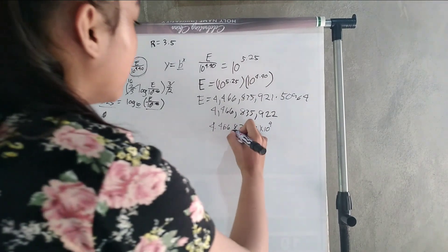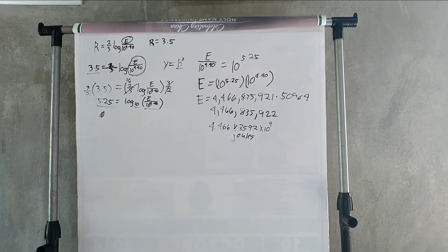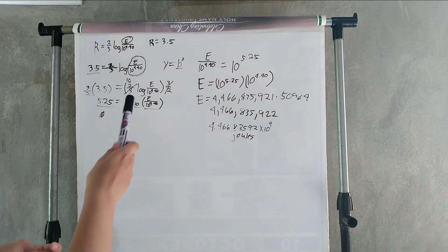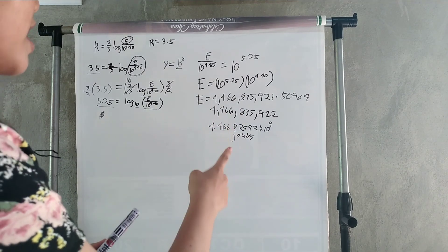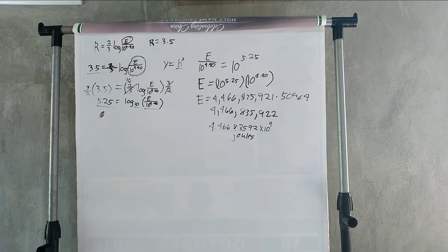So our final answer is 4.466835922 times 10 to the power of 9 joules. So using this derived formula, we can now find the energy released by the 3.5 magnitude earthquake which is 4.466835922 times 10 to the power of 9 joules.